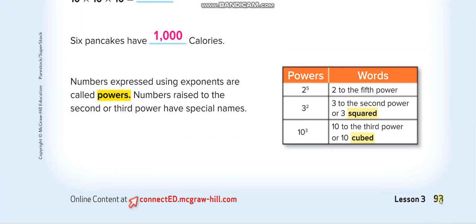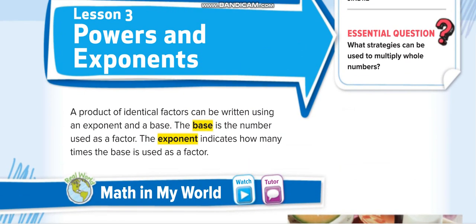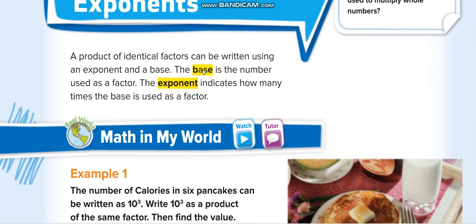Page number 93. Have you ever seen numbers like this — 2 with a power of 5? This small number written above is known as power or exponent. For example, 10³ — that small number 3 above is called power or exponent. It has two names: power or exponent. Both mean the same thing.